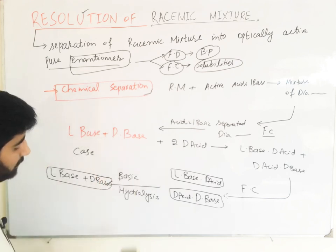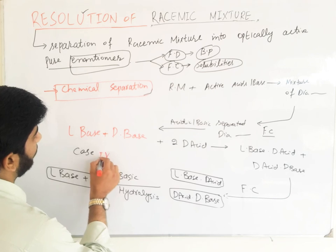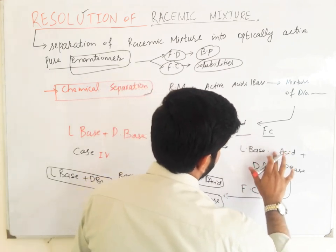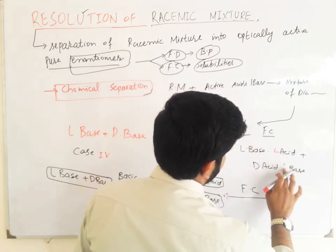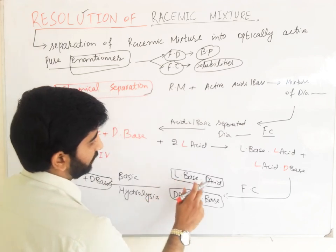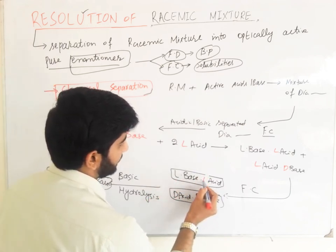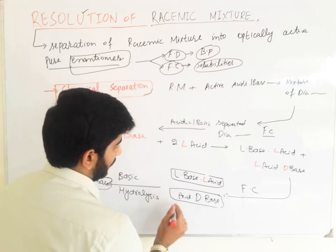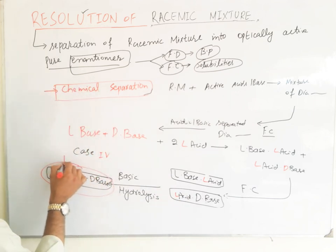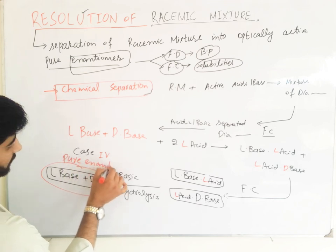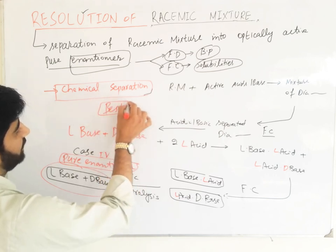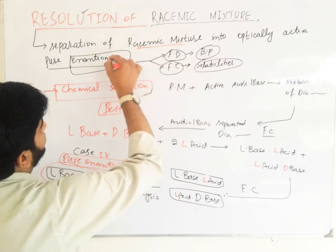Case number four is when we use levo-acid. Here we have l-base·l-acid and d-base·l-acid as the diastereomer mixture. After fractional crystallization we obtain l-base·l-acid and d-base·l-acid as separated diastereomers. Then we do basic hydrolysis and we get the pure enantiomers. This is the best technique for converting the racemic mixture into its pure enantiomers.